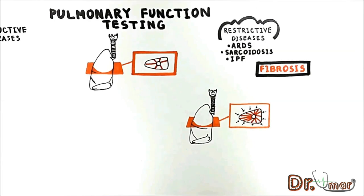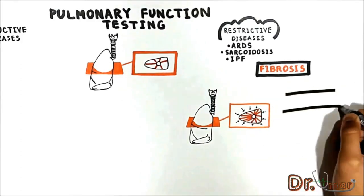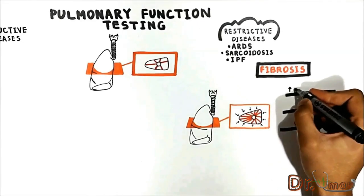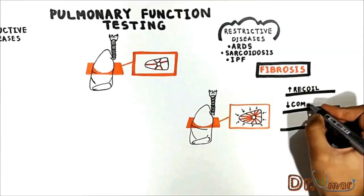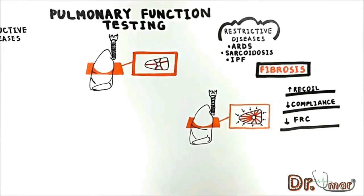Increased recoil force decreases compliance, making the lung difficult to expand during inspiration. For this reason, patients with restrictive pulmonary disease mainly have trouble with inspiration, not expiration. To sum up: in restrictive lung disease we have increased recoil force, decreased compliance, and decreased FRC because of the recoil force that deflates the lung.